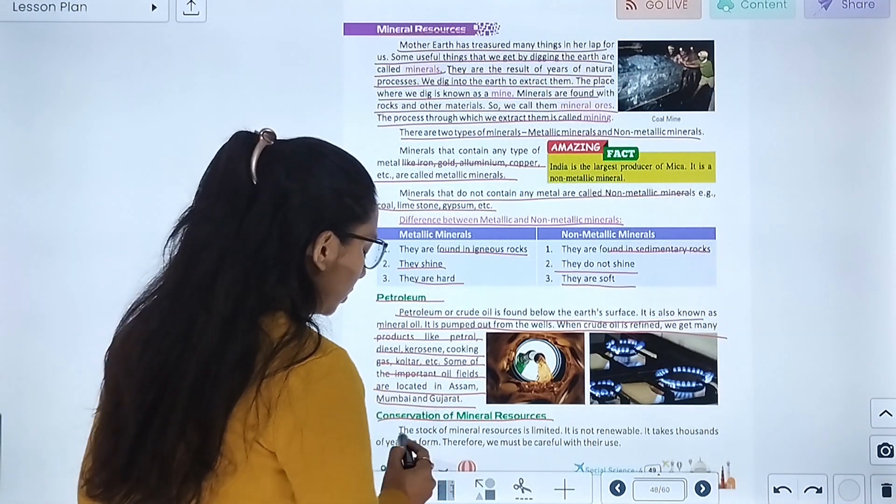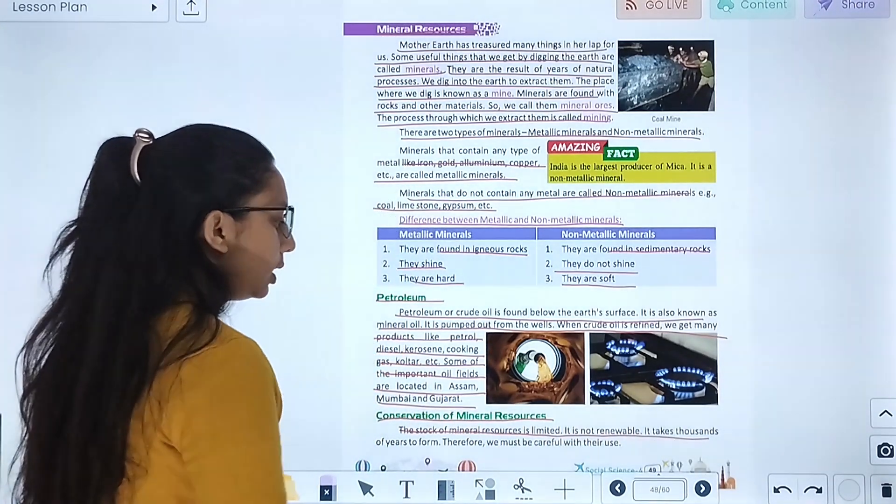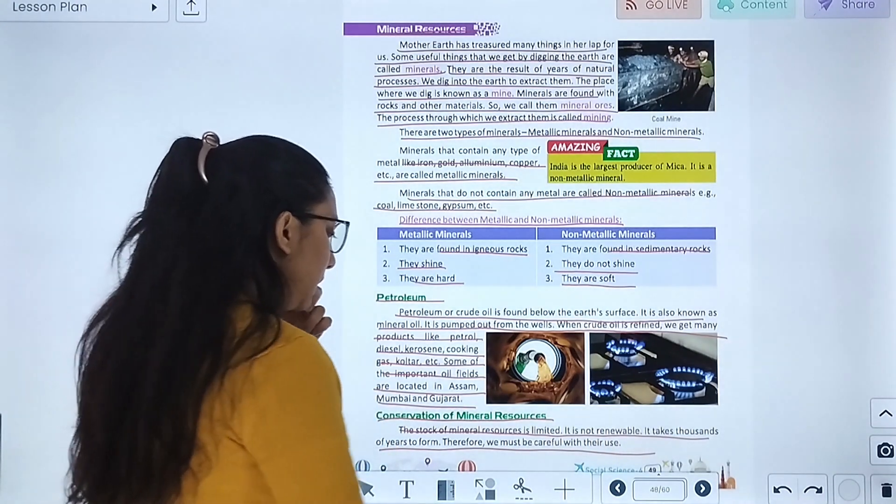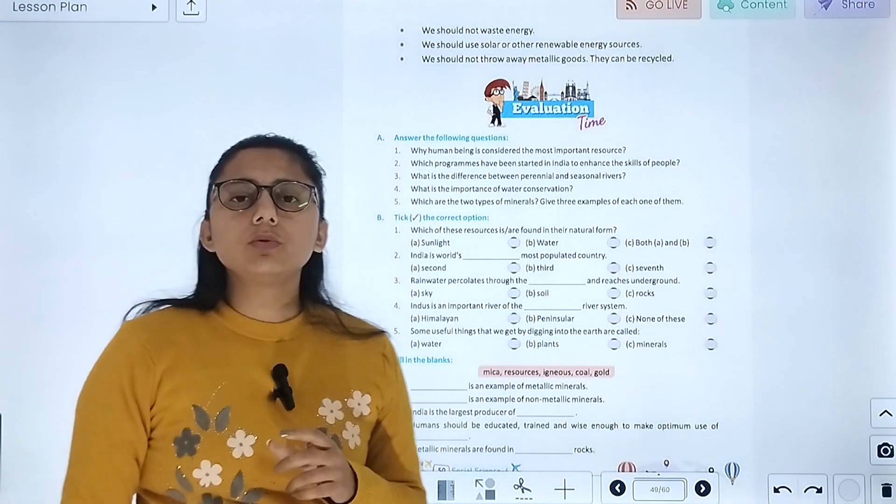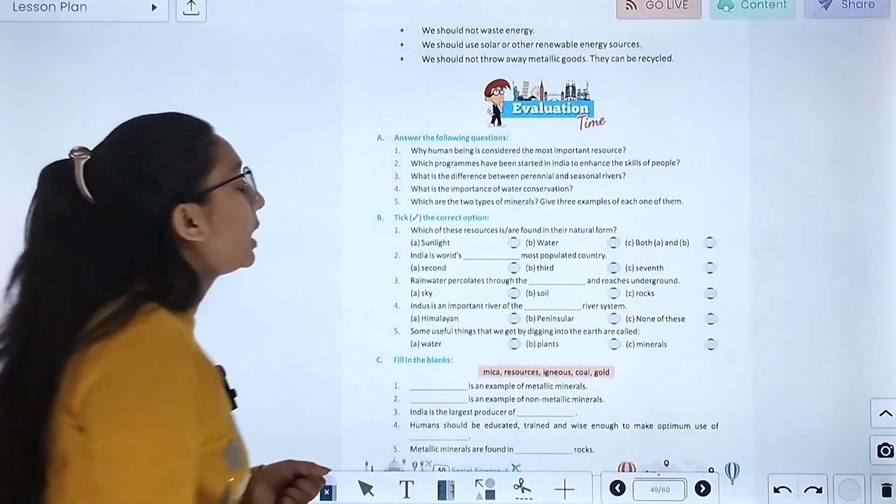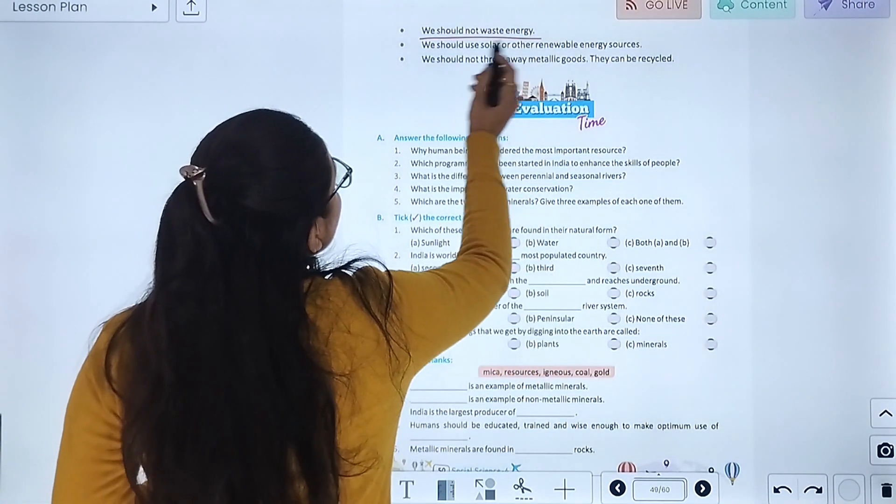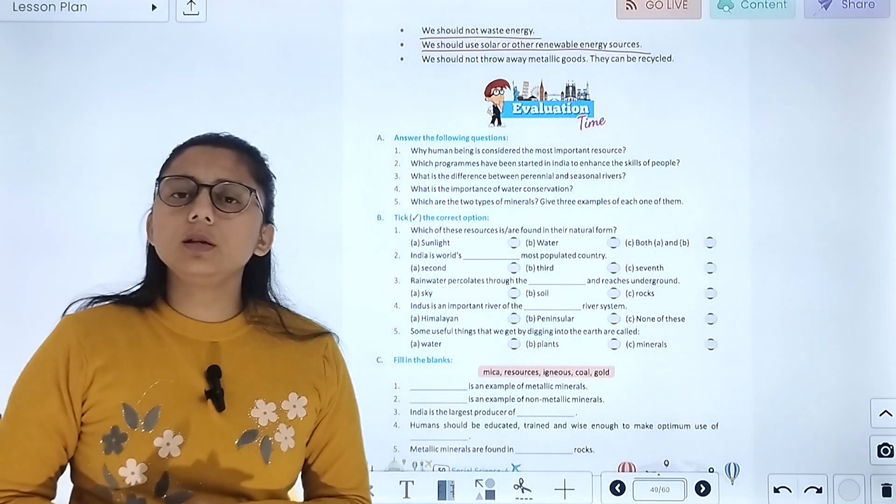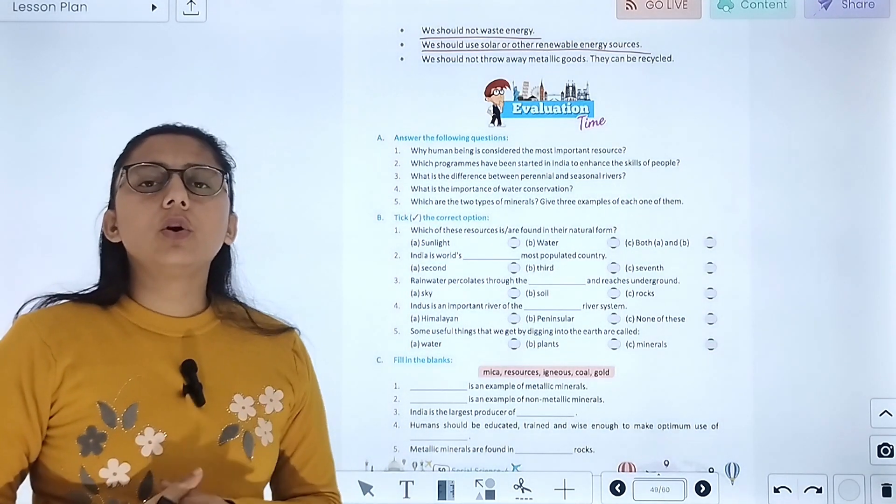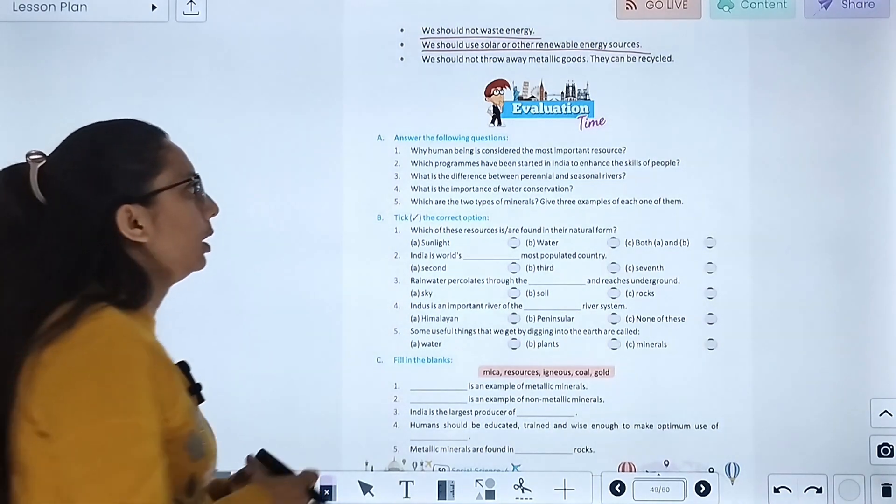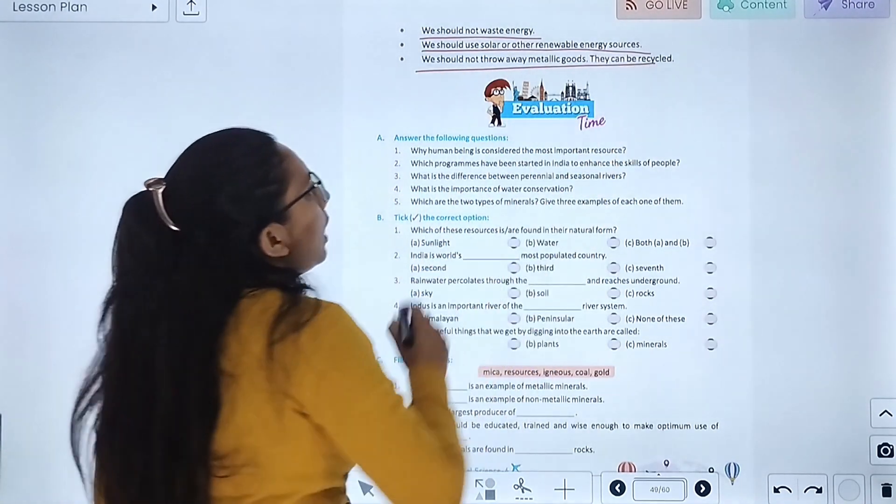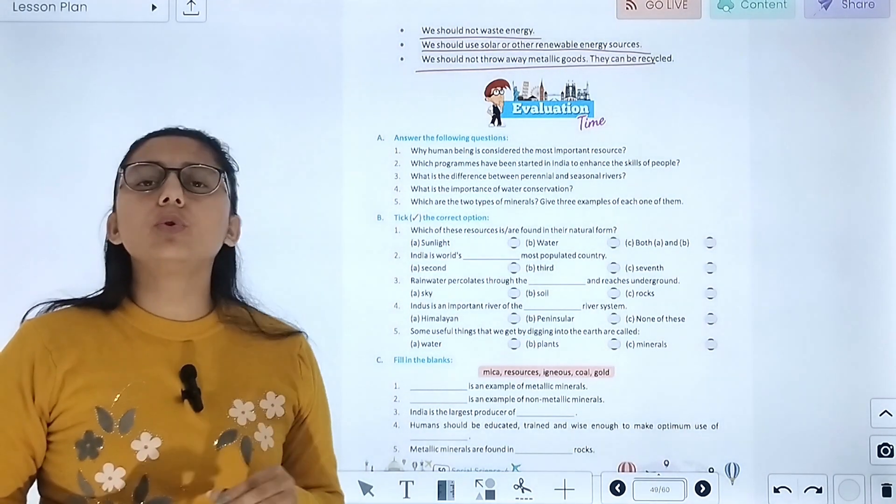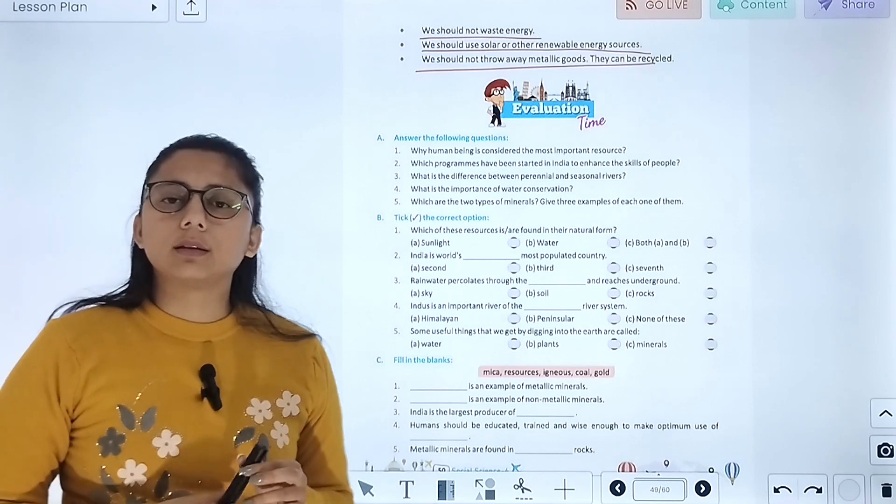Conservation of mineral resources. The stock of mineral resources is limited. It is not renewable. It takes thousands of years to form. Therefore, we must be careful with their use. We should not waste energy. We should use solar energy or other renewable energy. We should not throw away metallic goods. They can be recycled.